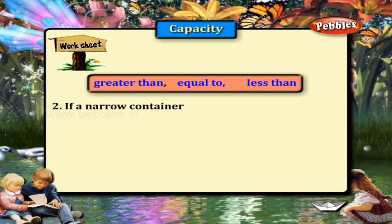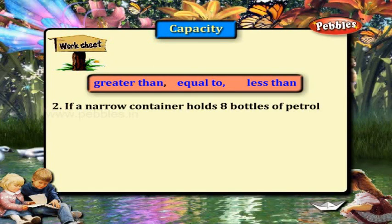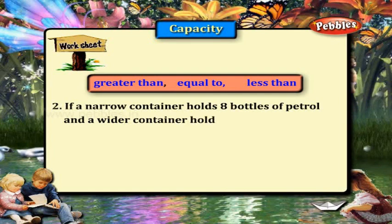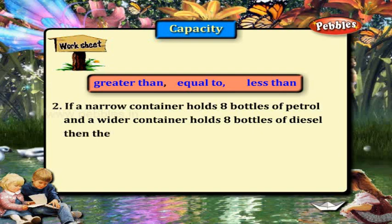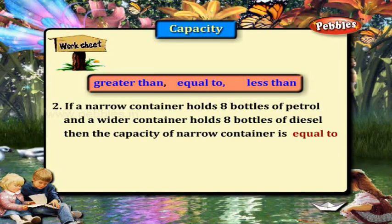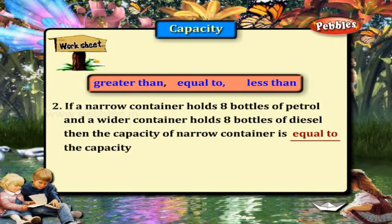If a narrow container holds eight bottles of petrol and a wider container holds eight bottles of diesel, then the capacity of the narrow container is equal to the capacity of the wider container.